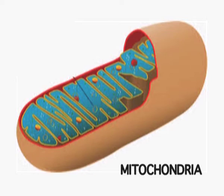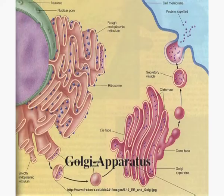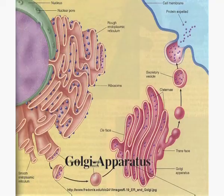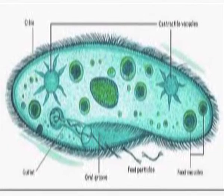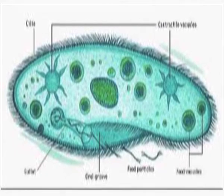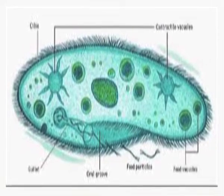mitochondria, lysosomes, Golgi apparatus, etc. They have a protoplasmic grade of organization. And just like Monerans, these are also microscopic — they cannot be seen with the naked eye.